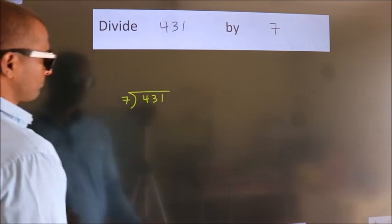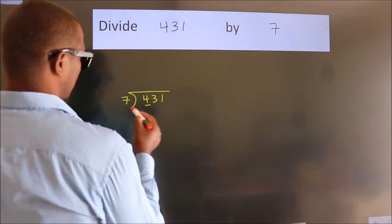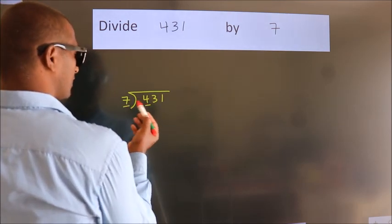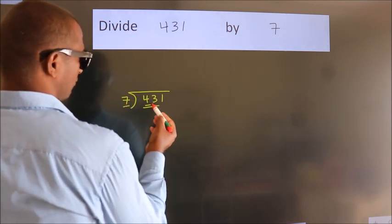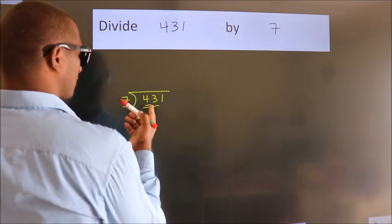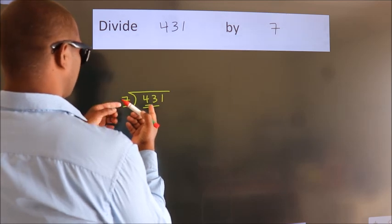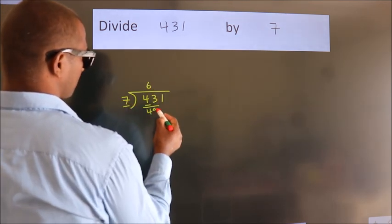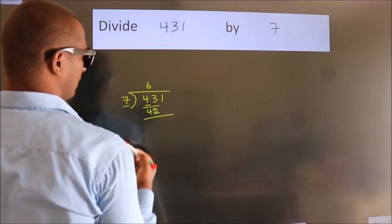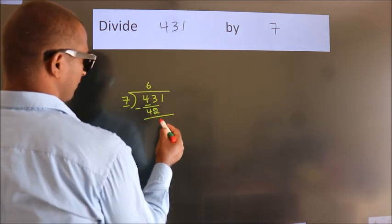Next. Here we have 4, here 7. 4 is smaller than 7, so we should take 2 numbers, 43. A number close to 43 in the 7 table is 7 times 6, which is 42. Now we should subtract. We get 1.